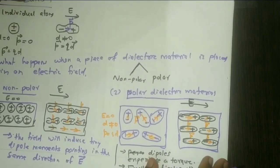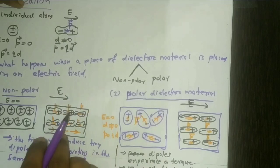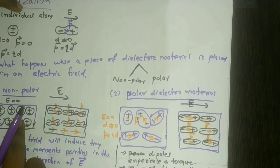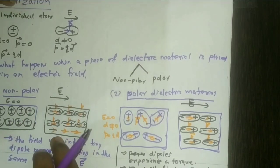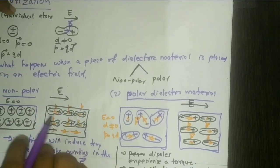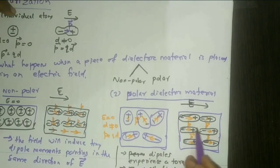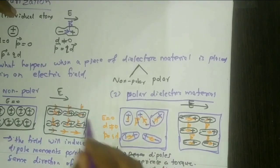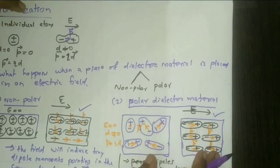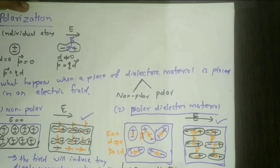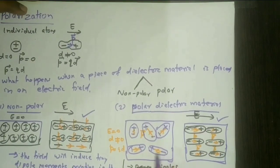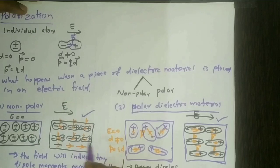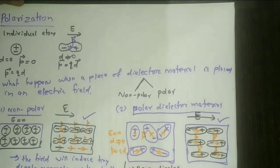Thus, to conclude: if you place a dielectric material — whether it is a polar dielectric or a non-polar dielectric — in an external electric field, a lot of dipoles point along the direction of the field. The material is polarized. Both materials are polarized. A convenient measurement of this effect is known as polarization — that is how many dipoles are aligned per unit volume.